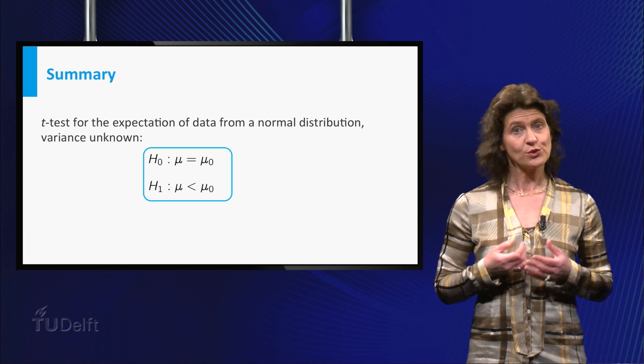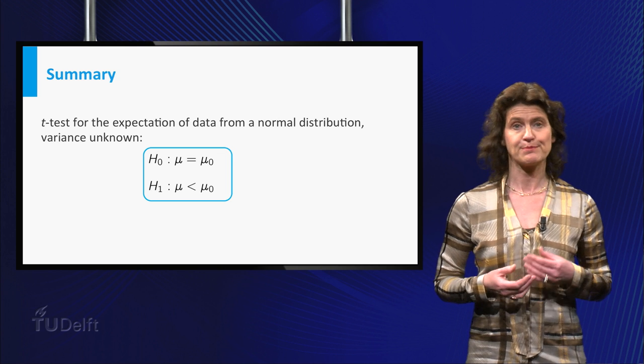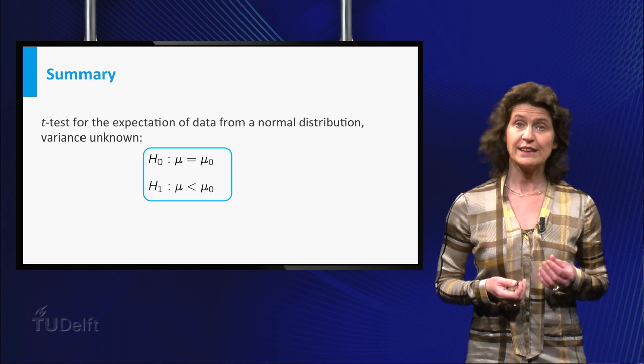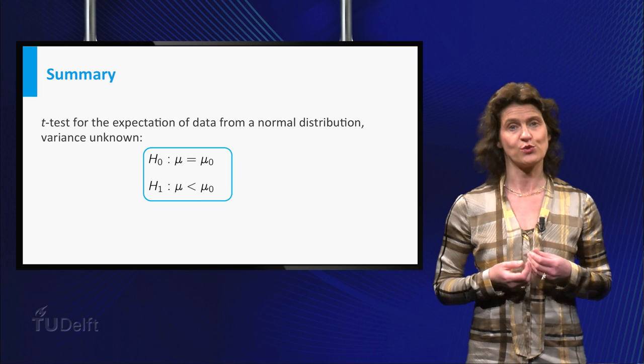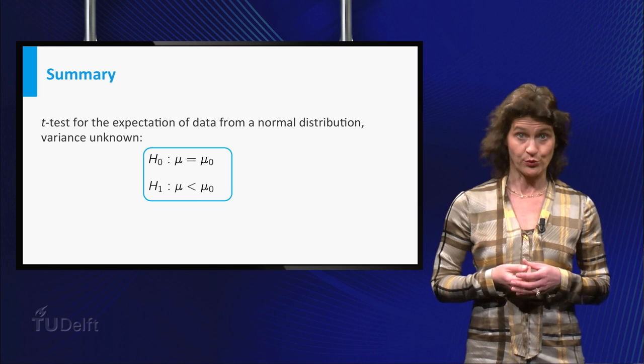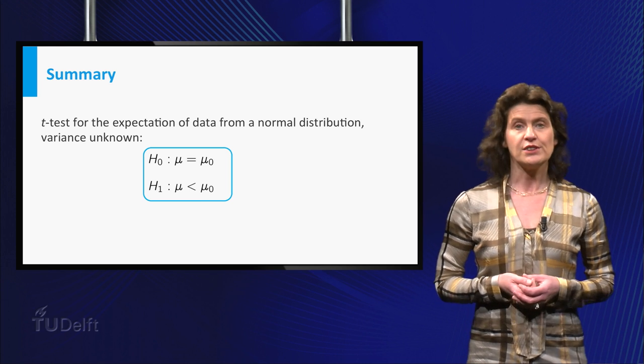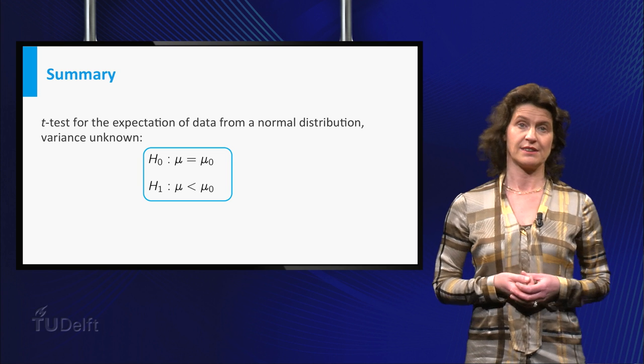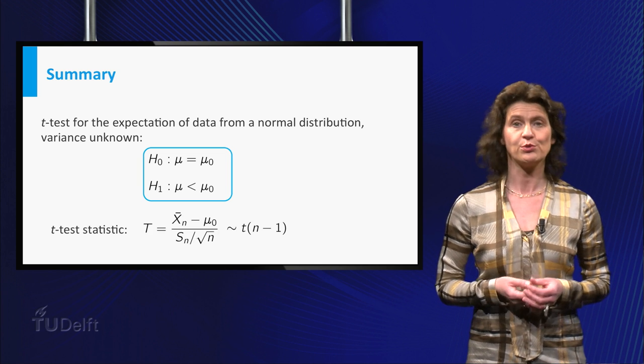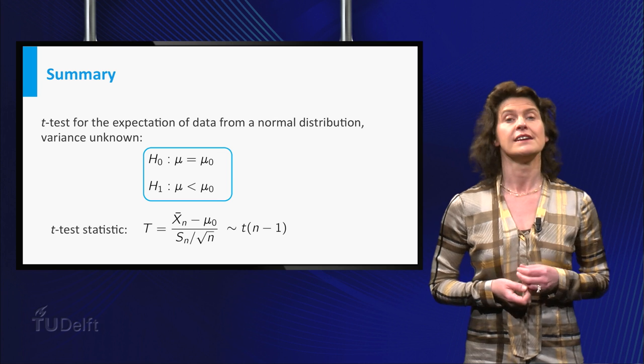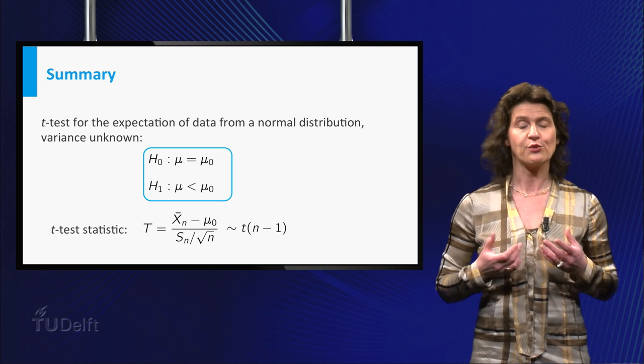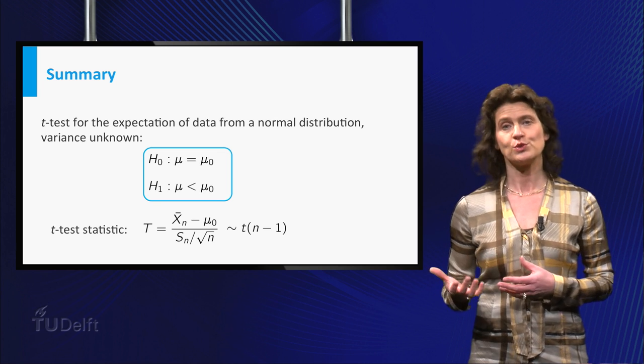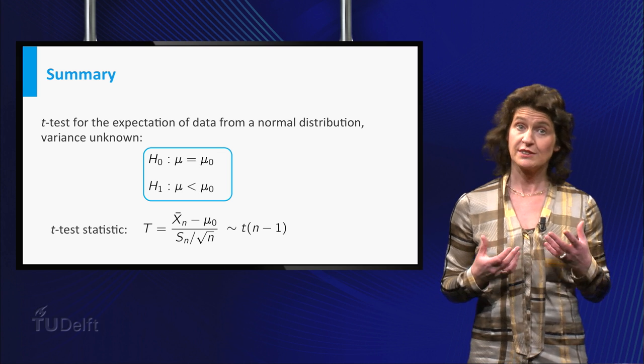So you learned that if you want to test hypotheses comparing an expectation to an a priori given value in the case of normally distributed data with unknown variance, you can use the t-test to do this. And you learned how to compute the t-test statistic that provides you with a numerical value to decide whether to reject the null hypothesis for such a testing problem.